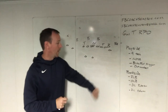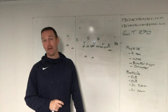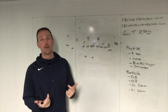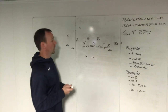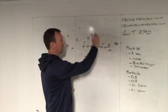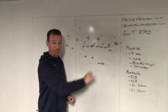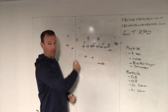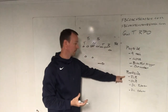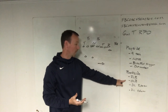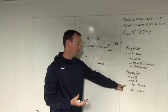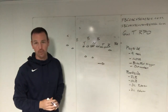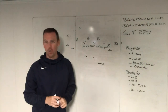Today we're going to talk about backside inside linebacker and different potential RPOs you can do to take advantage of this player. We're talking about inside linebacker today. Tomorrow we'll talk about the outside linebacker, defensive linemen that's an interior defensive lineman, and defensive linemen that's an exterior defensive lineman — all built in with the RPOs.